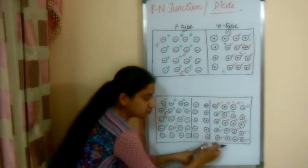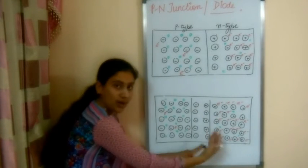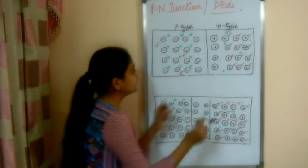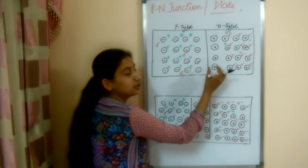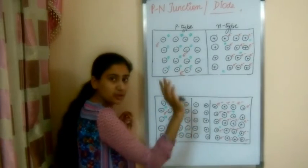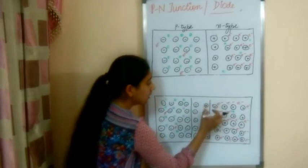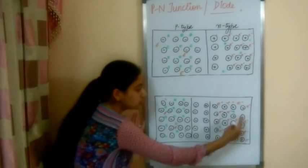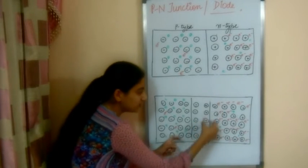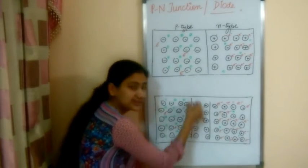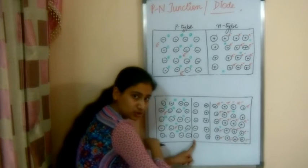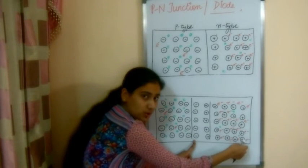The positive charge left on the N-side repels other holes from moving further toward that side, stopping their diffusion. Similarly, the negatively charged acceptor ions on the P-side repel electrons from passing through the junction. In this way, diffusion of both holes and electrons is stopped by the repulsion from these fixed charged ions.